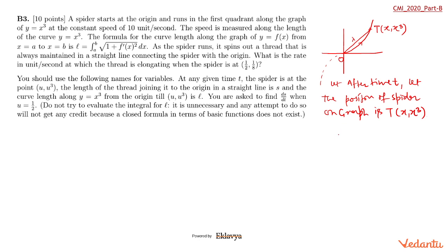Here, this length is given. The formula is given. L will be according to the given formula: 0 to x, under root of 1 plus f dash x whole square dx. And what is f(x)? It's x cubed. So we can know f dash x will be 3x squared.